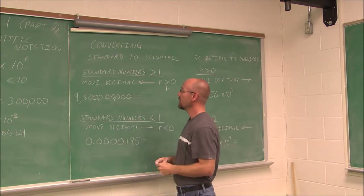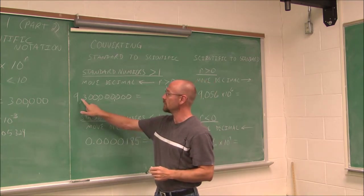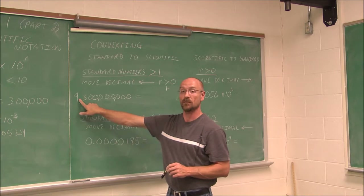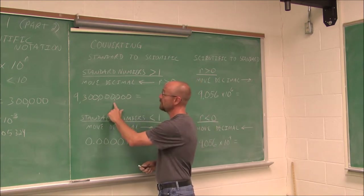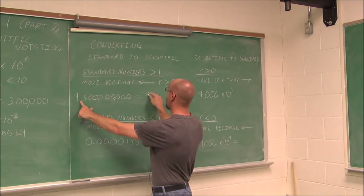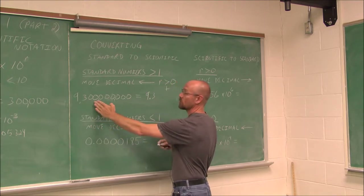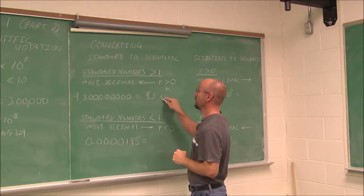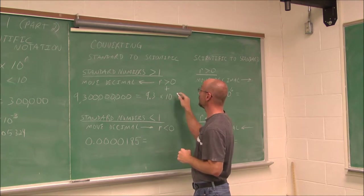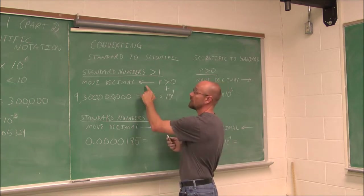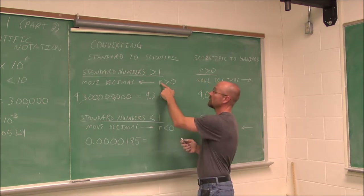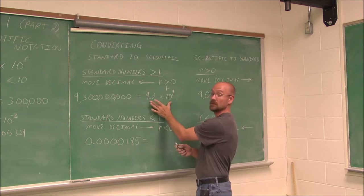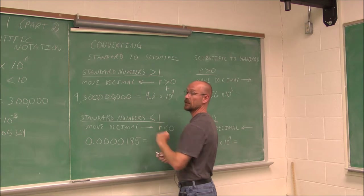To write a number in scientific notation, we must have the decimal after the first non-zero digit. Moving it all the way over — that's 3, 6, 9 spots — gives us 9.3 (we don't worry about trailing zeros). Moving the decimal 9 spots to the left gives us 10 to the 9th, a positive value. So we have 9.3 times 10 to the 9th. Positive exponents means this is a large number.